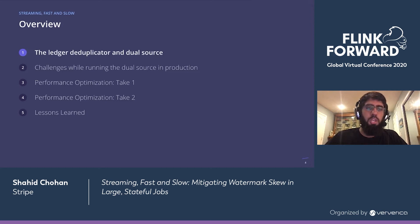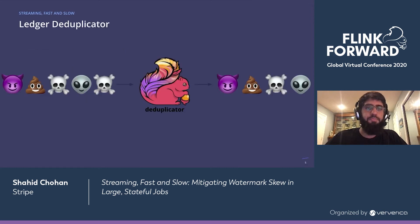Let's start by talking about the deduplicator. A deduplicator is a system that reads in records and only outputs the unique records it has seen. In this example, we are deduplicating emojis, and the duplicate skull emojis are deduplicated and only appear once in the output on the right.